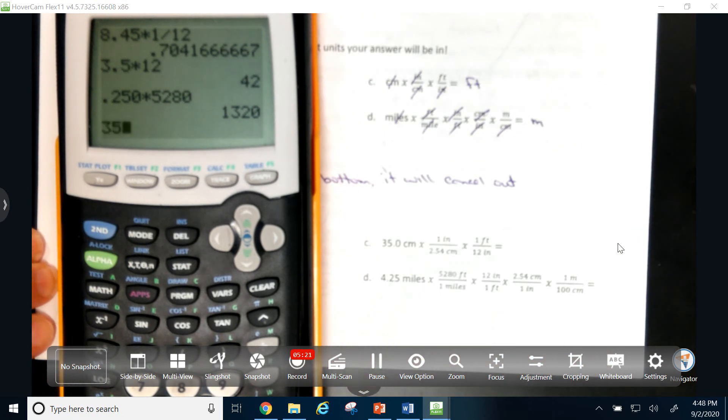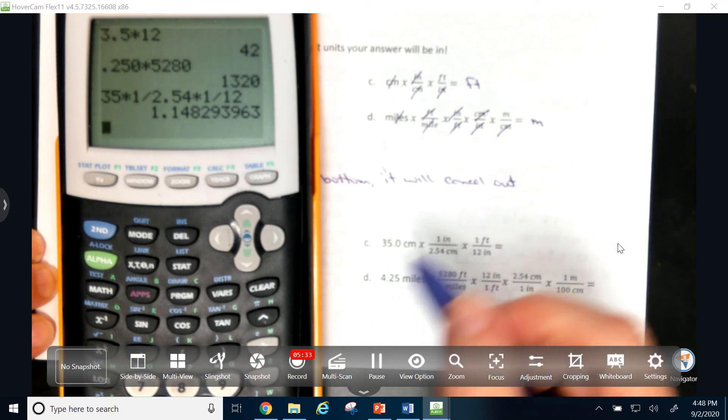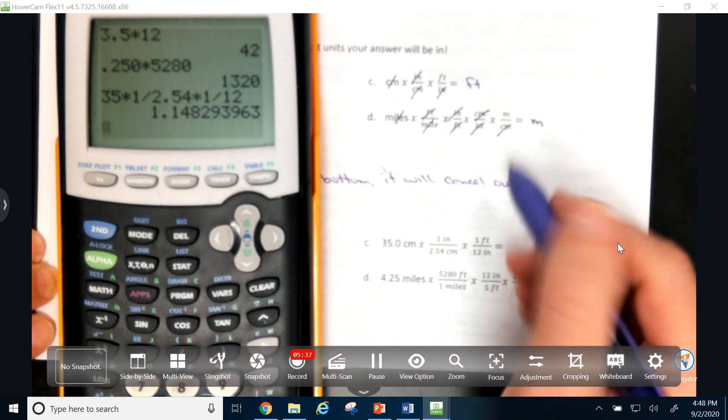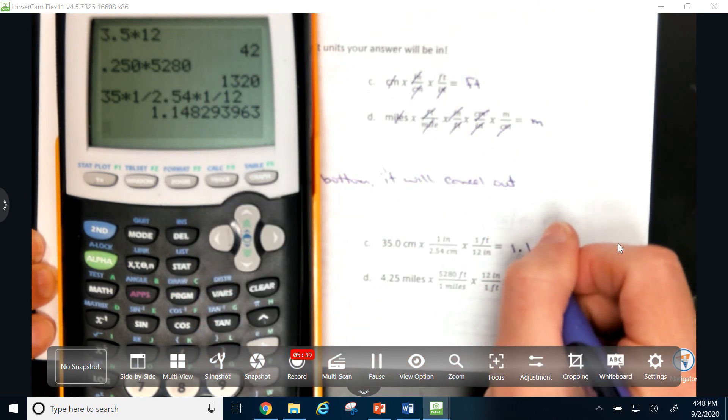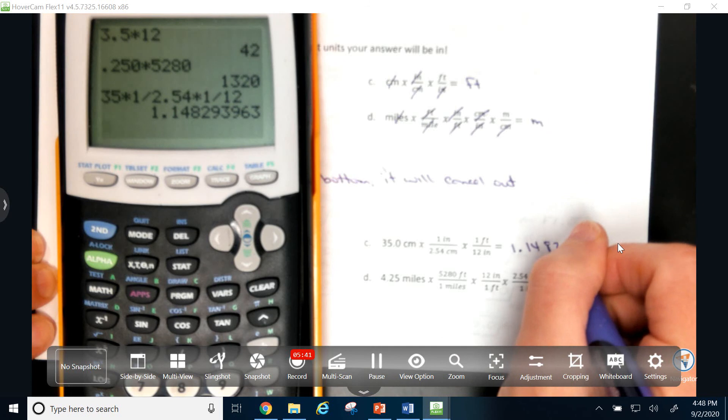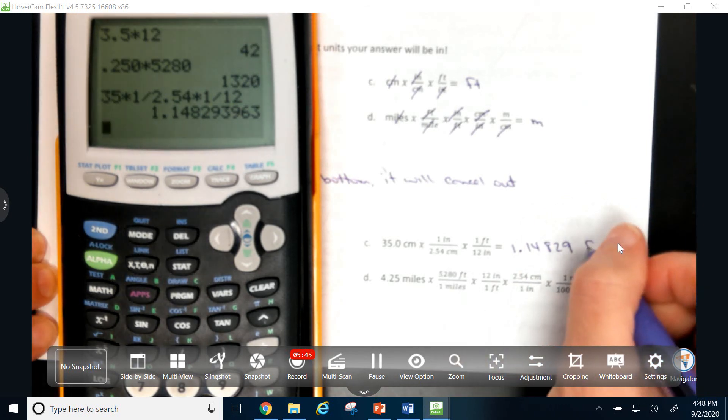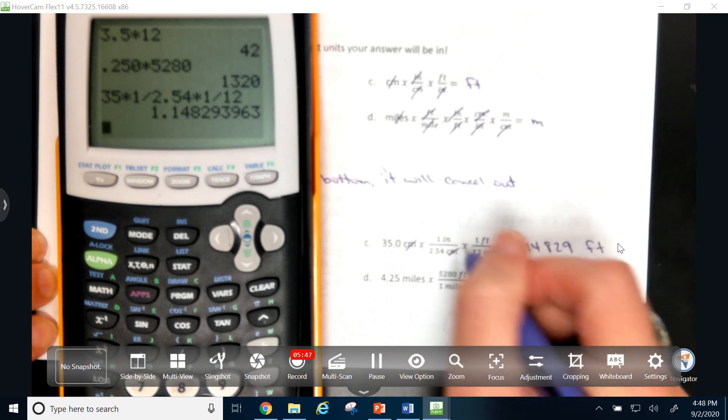Here, I've got 35 times 1, divided by 2.54, times 1, you don't have to, but you can if you want, divided by 12. So notice, I multiplied by things that were in the top, I divided by things that were in the bottom. And I get 1.14829. I'm just not going to write the rest of those numbers. And my answer would be in feet, because the centimeters cancel and the inches cancel.